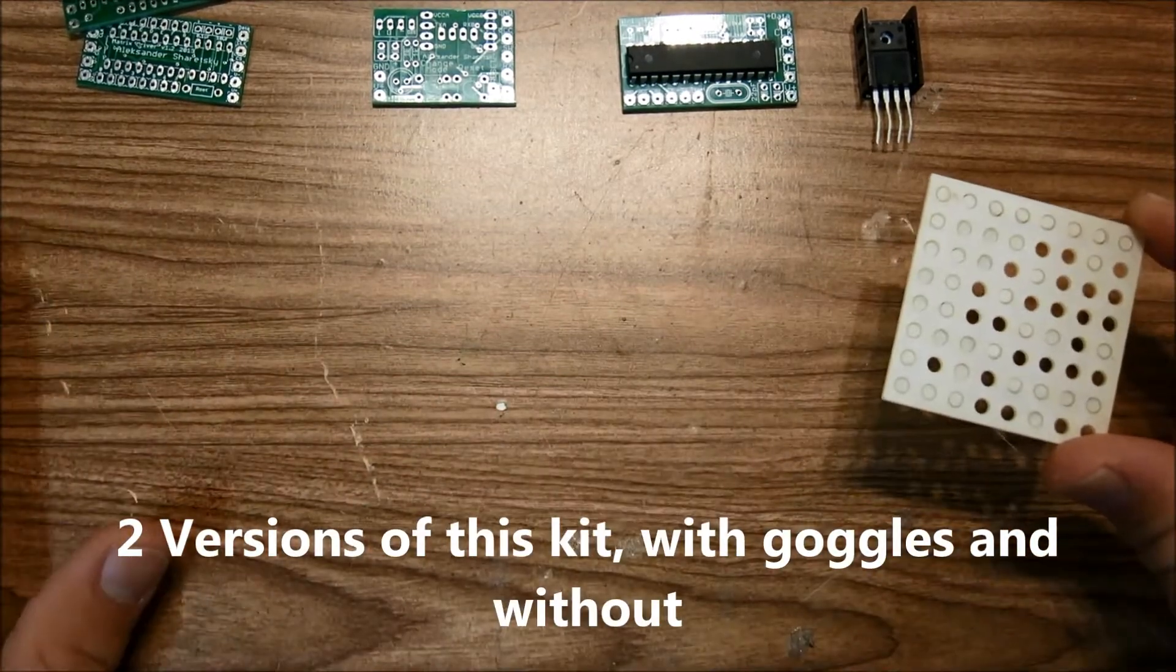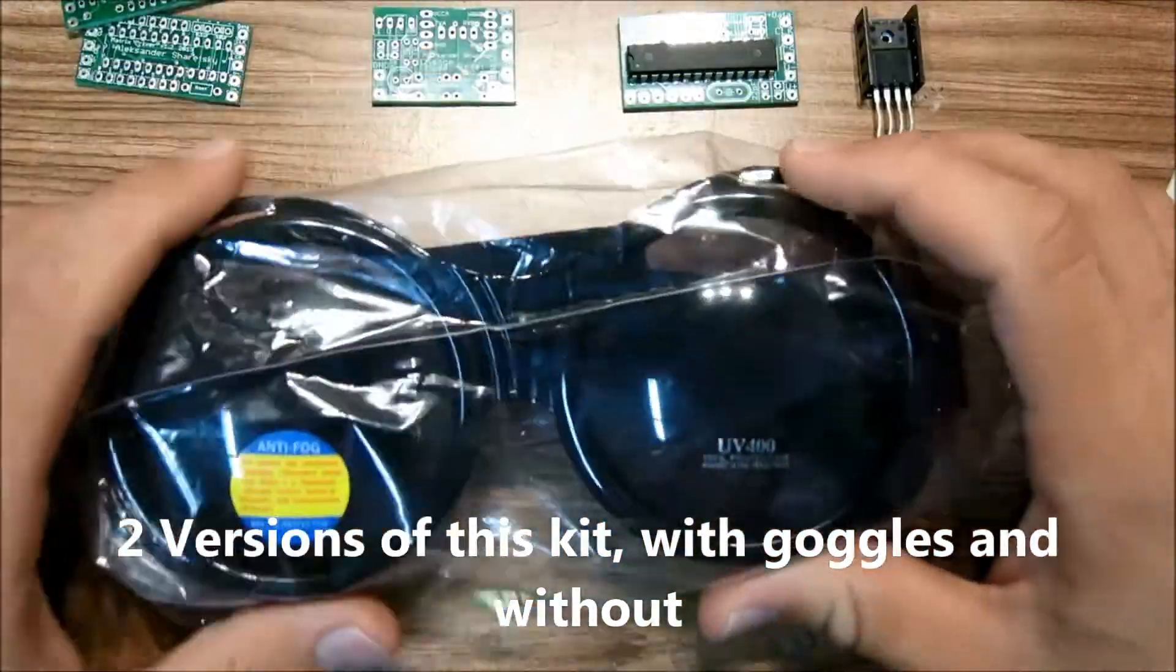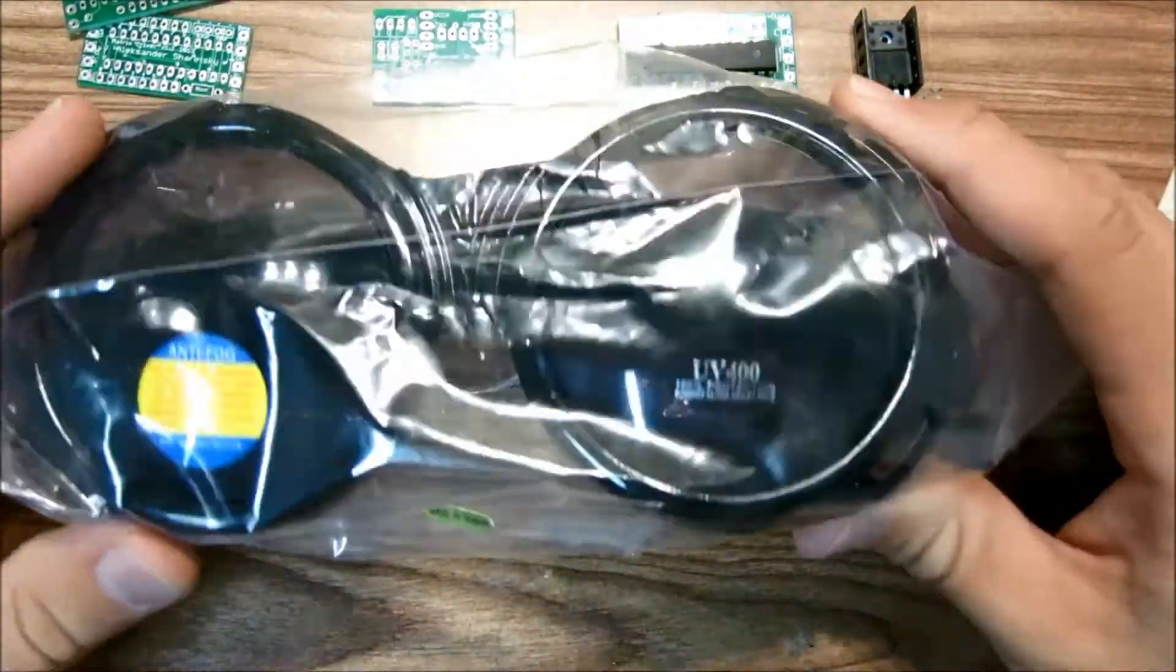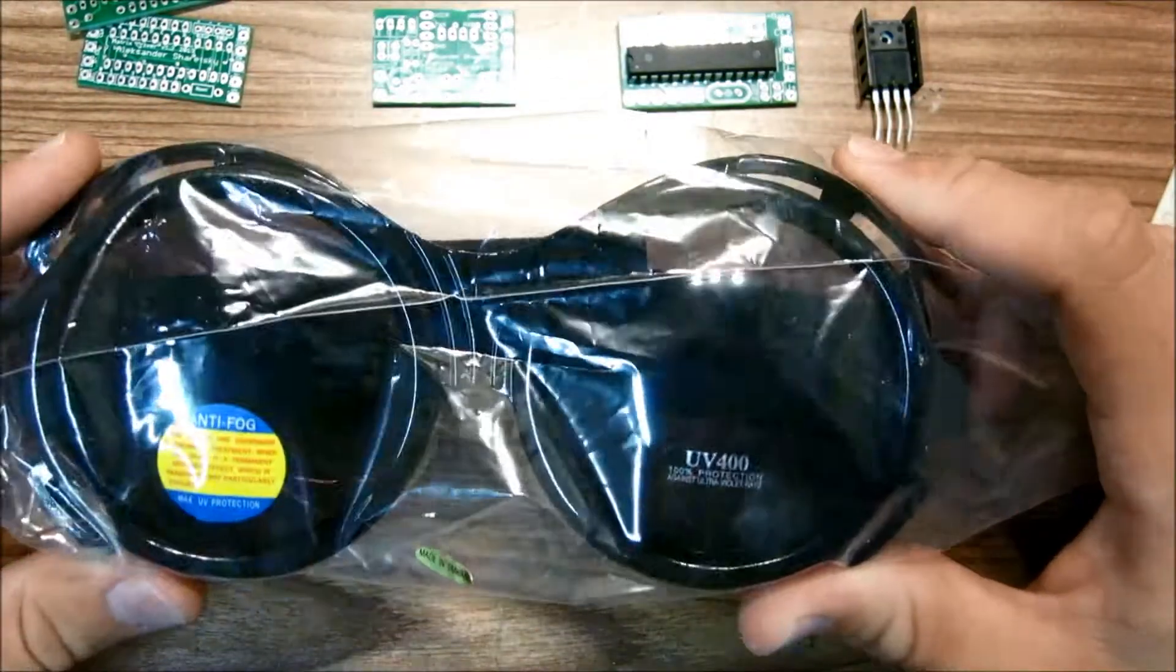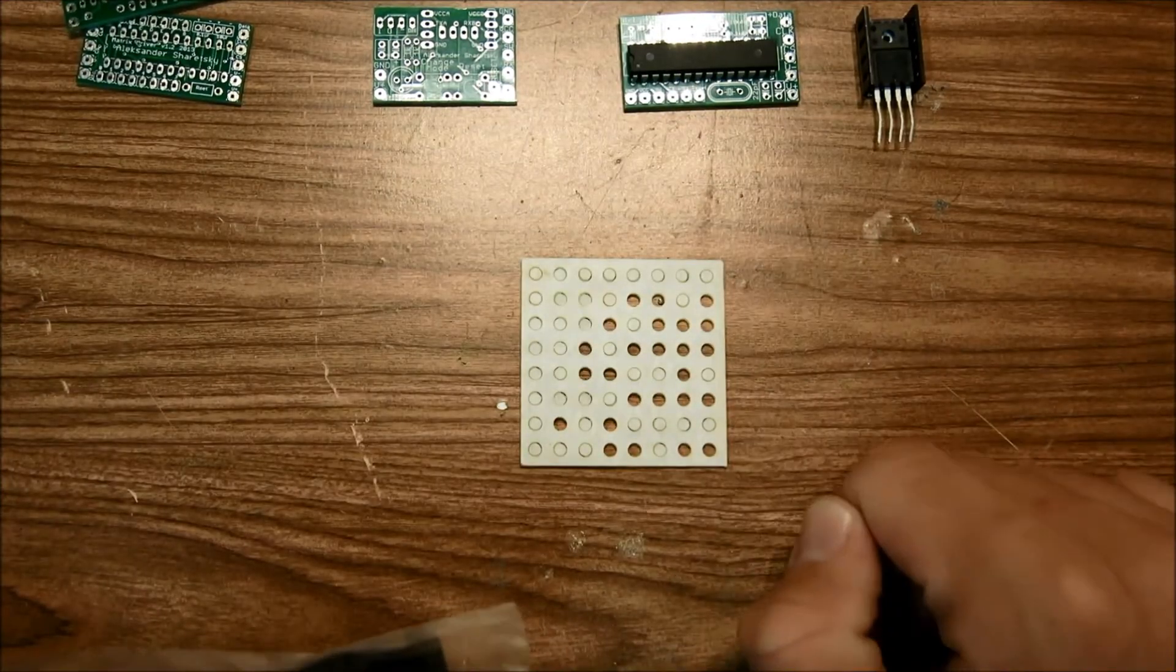There are two versions of the kit. There is a version that comes with these goggles and there is also a version that does not come with any goggles at all. So if you want to use your own goggles, make sure you could fit a 1.7 by 1.7 LED matrix in them.